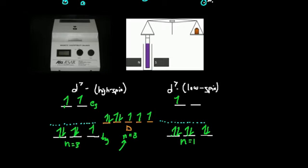Because there's a different number of unpaired electrons, both states are paramagnetic, but for the same metal with different numbers of unpaired electrons, the high spin state will weigh a different amount than the low spin in a magnetic field. You can actually determine whether it's high spin or low spin by putting that compound in a magnetic field, and the number that comes out — the molar susceptibility — lets you back-calculate the number of unpaired electrons and determine which state it is.